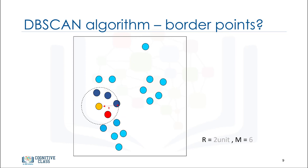Okay, what happens if it's not a core point? Let's look at another point. Is this point a core point? No. As you can see, there are only five points in this neighborhood, including the yellow point. So, what kind of point is this one? In fact, it is a border point.